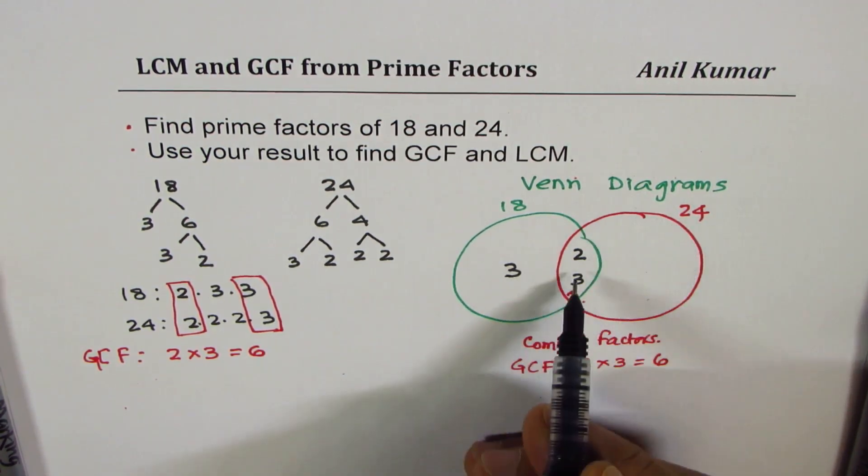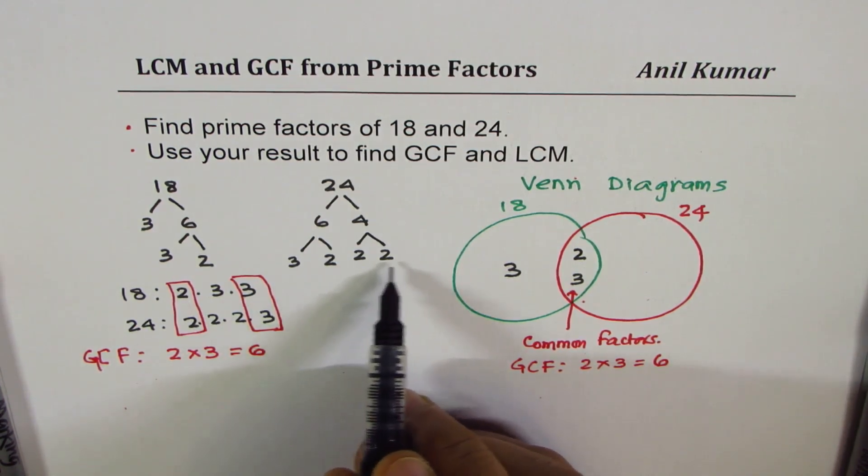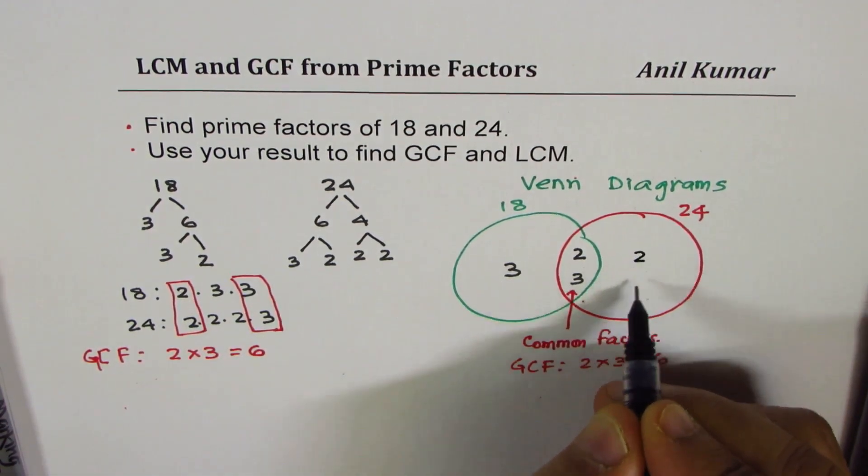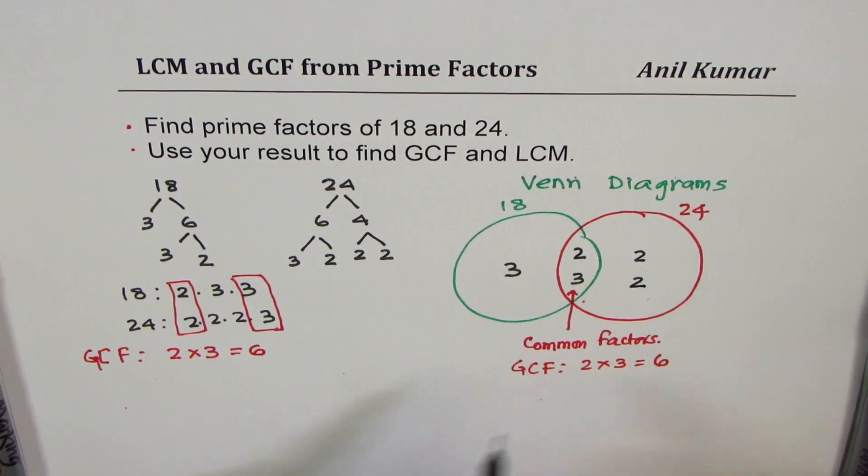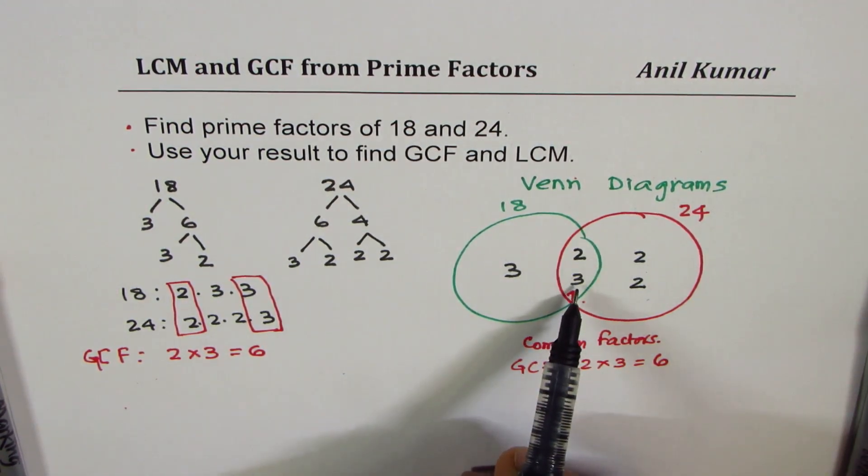For 24, we have already taken care of 2 times 3. Now we are left with these two 2's. So we write 2 and 2 here. So you can check 2 times 2, 4. 4 times 2, 8. 8 times 3, 24.